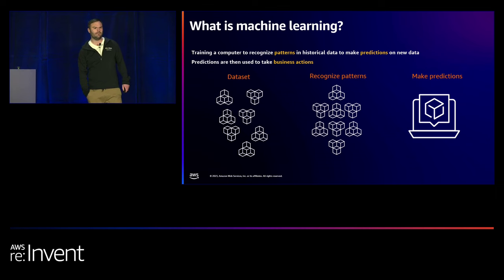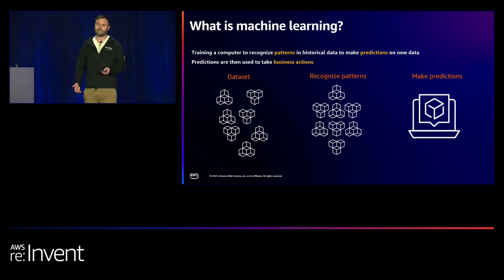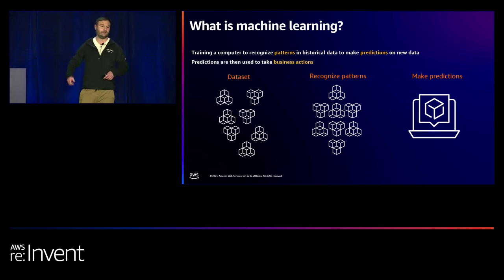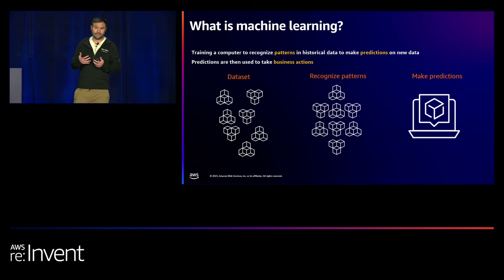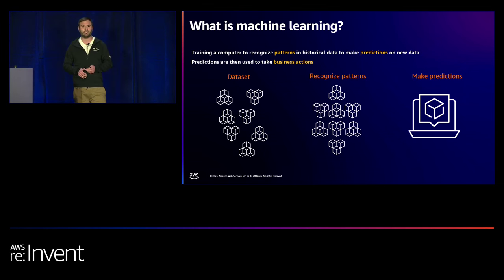Take predicting credit card fraud as an example of supervised machine learning. I have a big data set — maybe years of credit card transactions — labeled as valid or fraudulent. Instead of explicitly defining rules, I can feed that labeled training data into a traditional machine learning model to develop a classifier that picks up patterns and signals to determine if a new transaction is fraudulent.